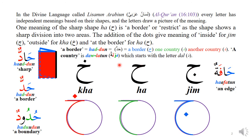The dot of the JIM and the KHA changes the meaning of the HA. One meaning of the HA is a border or boundary — 'hadun.' You can see the HA indicates the border, and the DAL indicates one country, while the other DAL indicates another country. DAL represents a country, called 'dowlatun' in Arabic, so you can understand it is a border between two countries. Related words include 'hadun' meaning something sharp, 'hudud' meaning boundary, and 'haffatun' meaning an edge — all related to a sharp distinction between two parts.